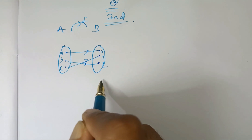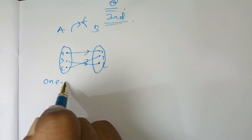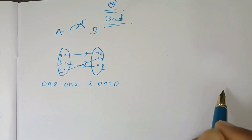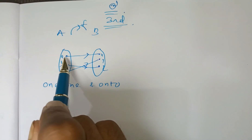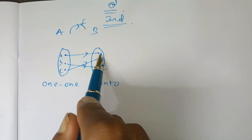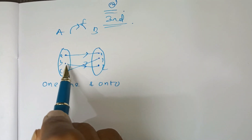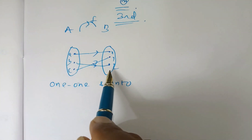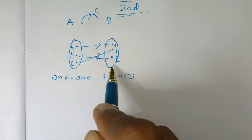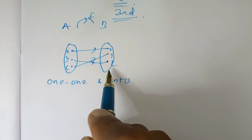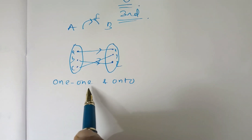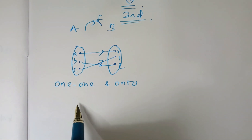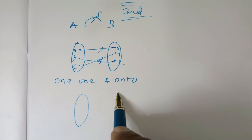This is clear from this picture that this is a one-one function and also an onto function, because every pre-image has an image, every pre-image is distinctly connected with its image, and no element in set B is left behind. Hence, this is both one-one and onto.